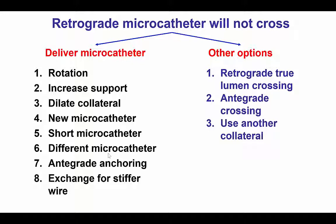Another approach is to increase antegrade guide catheter support by using anchoring, or if the microcatheter is very close to the distal target vessel, remove the wire that has crossed the collateral and advance a stiffer wire that can offer more support. Alternatively, we can attempt retrograde true-to-true crossing, use the retrograde wire as a marker for antegrade crossing, or just abandon this collateral altogether and try another collateral.